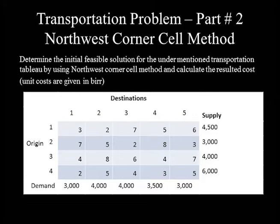It's recommended to follow a step-by-step approach for solving problems of this type. Before proceeding to Step 1, we must check whether the model is balanced, because the transportation algorithm is based on a balanced transportation model. Total supply = 4,500 + 3,000 + 4,000 + 6,000 = 17,500. Total demand = 3,000 + 4,000 + 4,000 + 3,500 + 3,000 = 17,500. Since demand equals supply, we can proceed without adding a dummy source or destination.